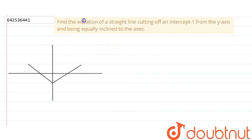Find the equation of a straight line cutting off an intercept minus 1 from the y-axis and being equally inclined to the axes.